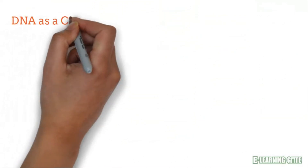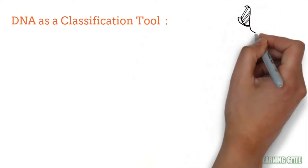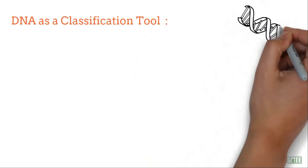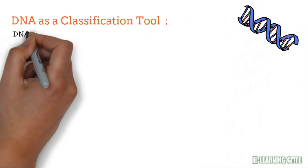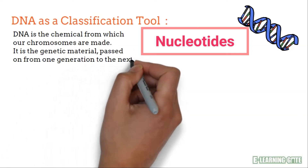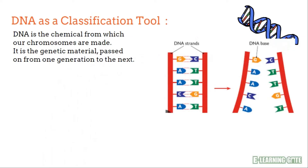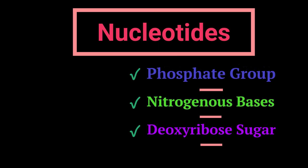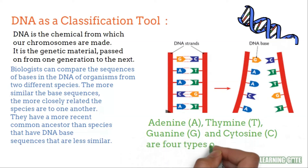Now let us see the role of DNA in classification. DNA is the chemical from which our chromosomes are made — it is the genetic material passed on from one generation to the next. The basic building blocks of DNA are nucleotides. Each nucleotide comprises three components: a phosphate group (which provides a negative charge), deoxyribose sugar (which forms the backbone of the DNA strand), and a nitrogenous base — adenine (A), thymine (T), cytosine (C), or guanine (G).